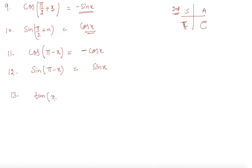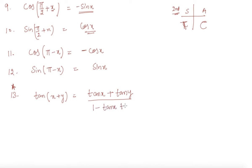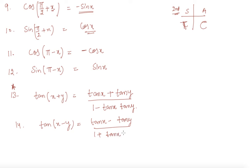The next very important formula — starred for exam importance — is tan(x+y) = (tan x + tan y) / (1 - tan x · tan y). Another formula: tan(x-y), where all the signs get reversed, giving (tan x - tan y) / (1 + tan x · tan y).